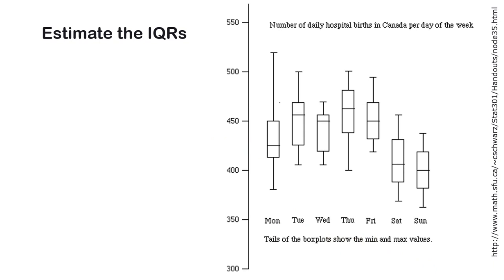Estimate the IQRs from this. This is the number of daily hospital births in Canada per day of the week from several years ago. But it happens this way. Now that we can induce births, doctors and nurses don't want to hang around on Saturday and Sunday, so they induce you on Friday or they wait until Monday to induce you.